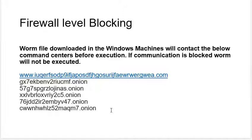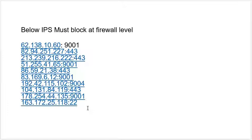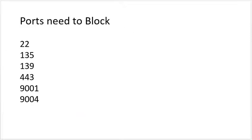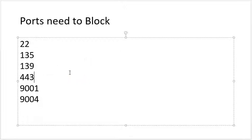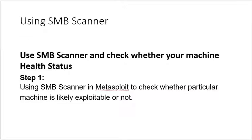My suggestion is to block all the command center URLs that are causing WannaCry to run. You have to block these URLs on an immediate basis. Along with these URLs, there are also a few IPs to block — I am placing all this information in my description. Along with the IPs, you have to block a few ports: 22, 135, 139, and 443. The most vulnerable ports are 443, 139, and 135. If you are not using these ports, block them immediately; if you are using them, configure customized ports and block the defaults.